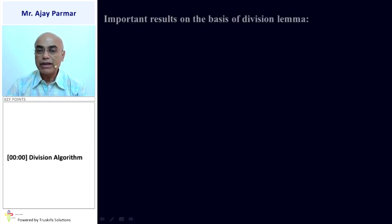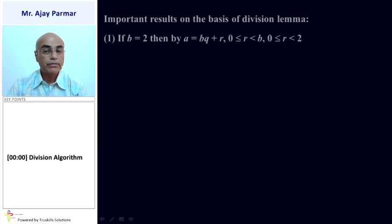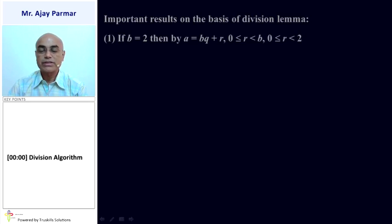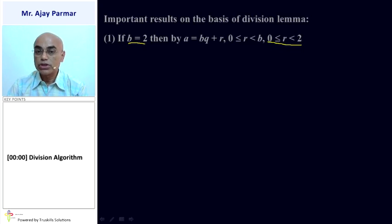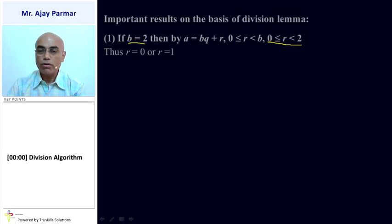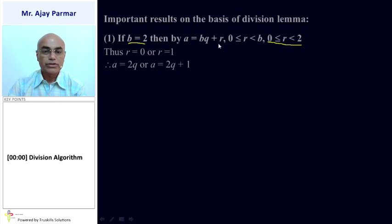Some important results that we derive on the basis of the division lemma: if B is equal to 2, then obviously A is equal to BQ plus R, where zero is less than or equal to R less than B. So, zero is less than or equal to R less than 2, giving R equal to 0 or R equal to 1. Substituting the values of B and R, A would be 2Q or A would be 2Q plus 1.